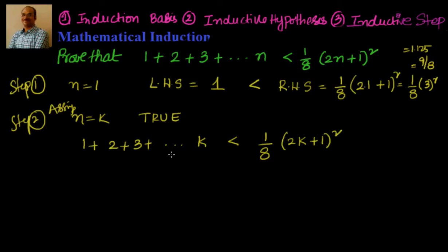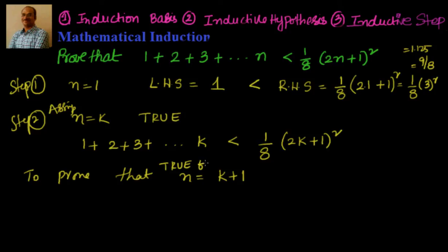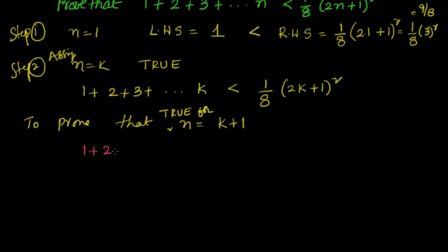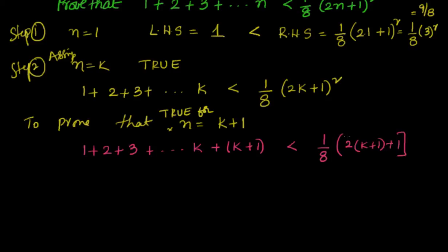Having assumed this is true, we now have to prove that the statement is true for n equal to k plus 1. What we have to prove is that 1 plus 2 plus 3 up to k+1 terms is less than 1/8 times (2(k+1)+1)² which simplifies to 1/8 times (2k+3) whole square. This is what I have to prove.